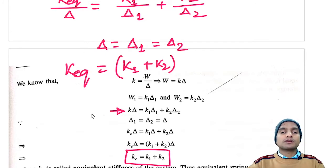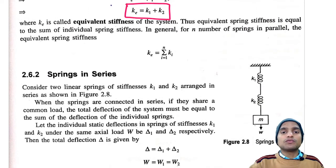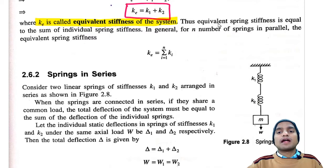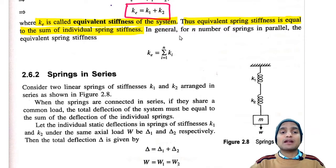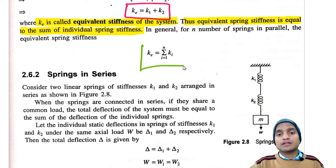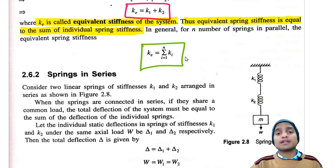We can conclude that K_eq is the equivalent stiffness of the system. In general, for n springs connected in parallel: K_eq = Σkᵢ, for i = 1 to n — all individual stiffnesses are simply added together.